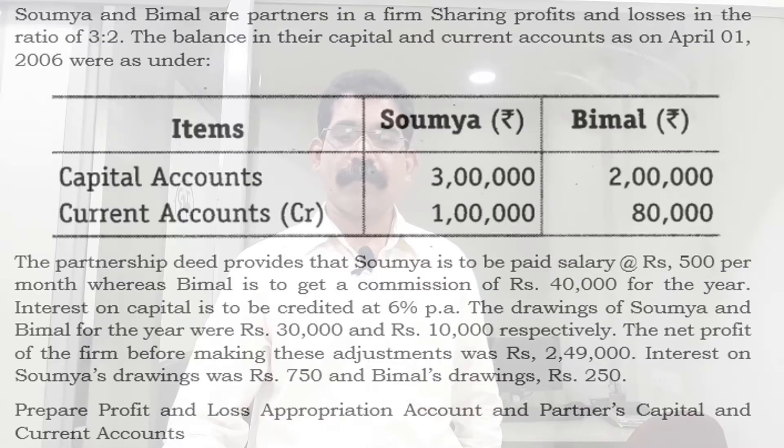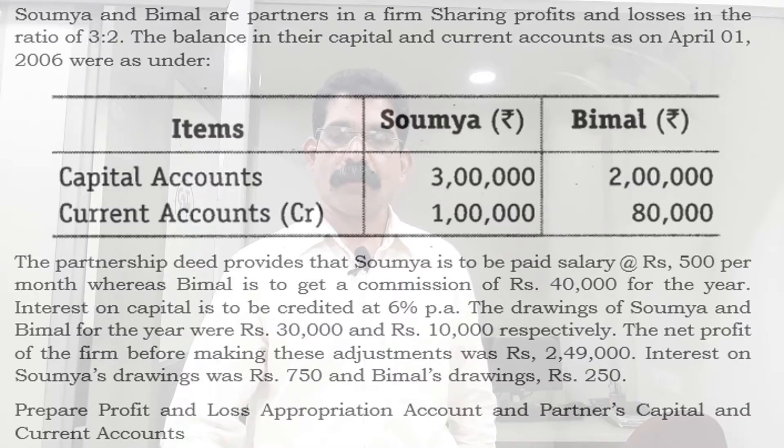Welcome back to SVG Academy. Today is our 12th class regarding partnership. Today we are going to solve one question. Soumya and Bimel are partners in a firm, sharing profits and losses in the ratio of 3 is to 2.